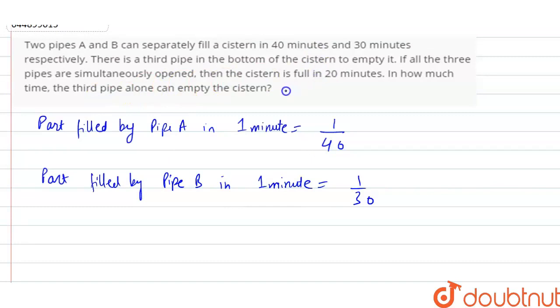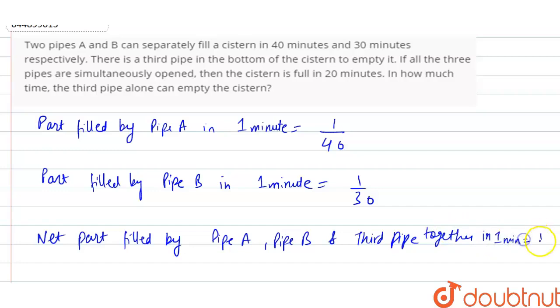Now the net part filled by A, B, and C - let's suppose the third pipe is C - is 20 minutes. So now net part filled by pipe A, pipe B, and third pipe together in - it is given 20 minutes. So in 1 minute it will be 1 by 20. Together in 1 minute is equal to 1 upon 20.